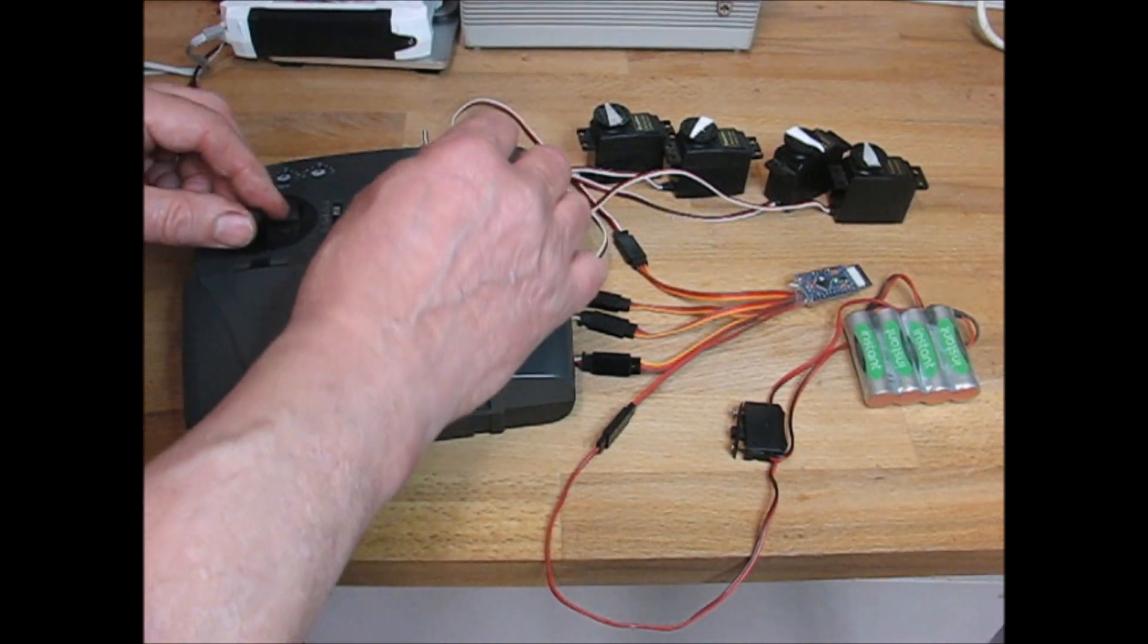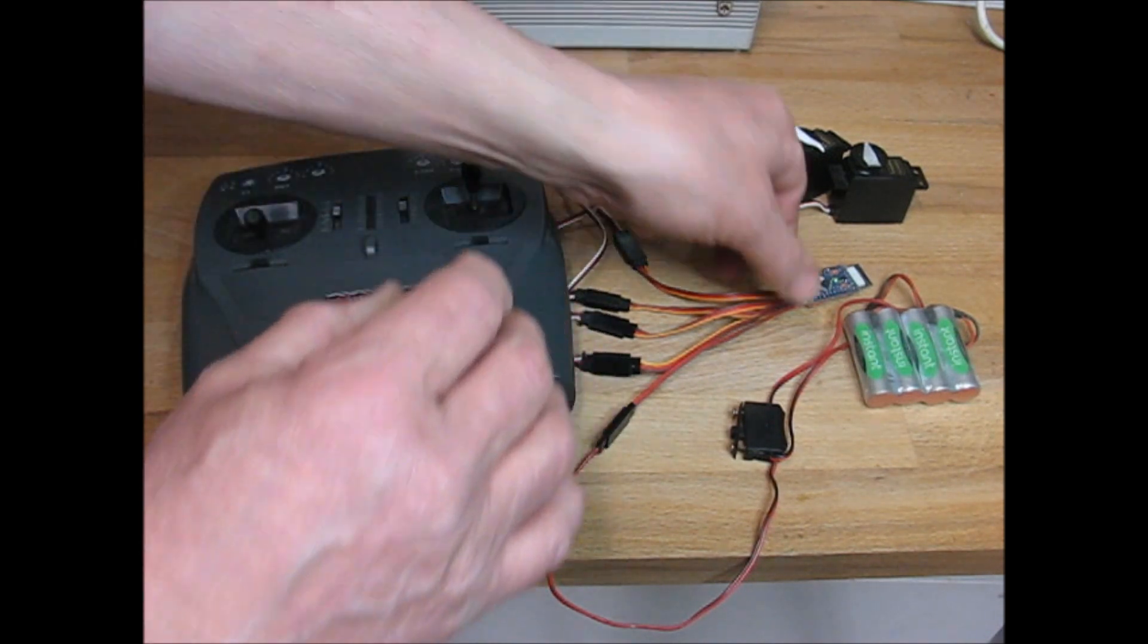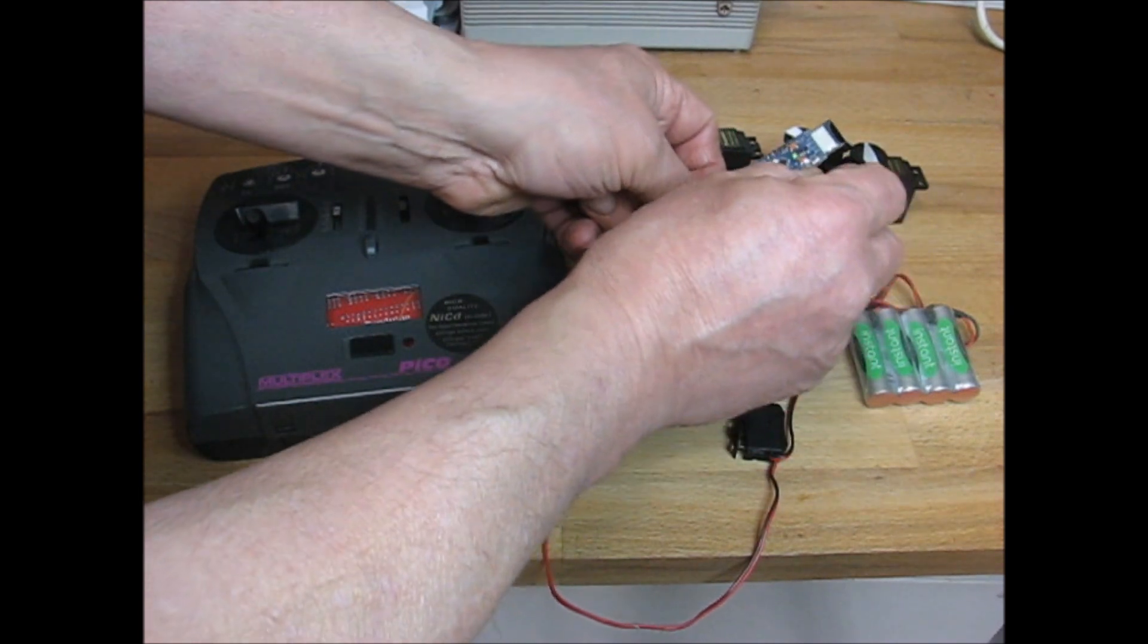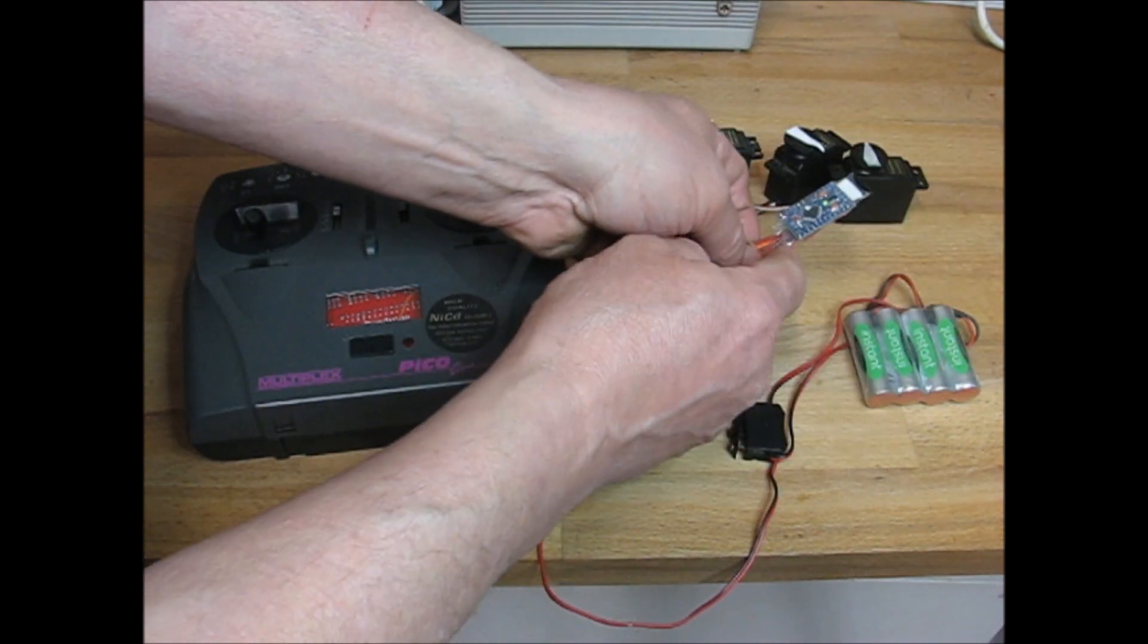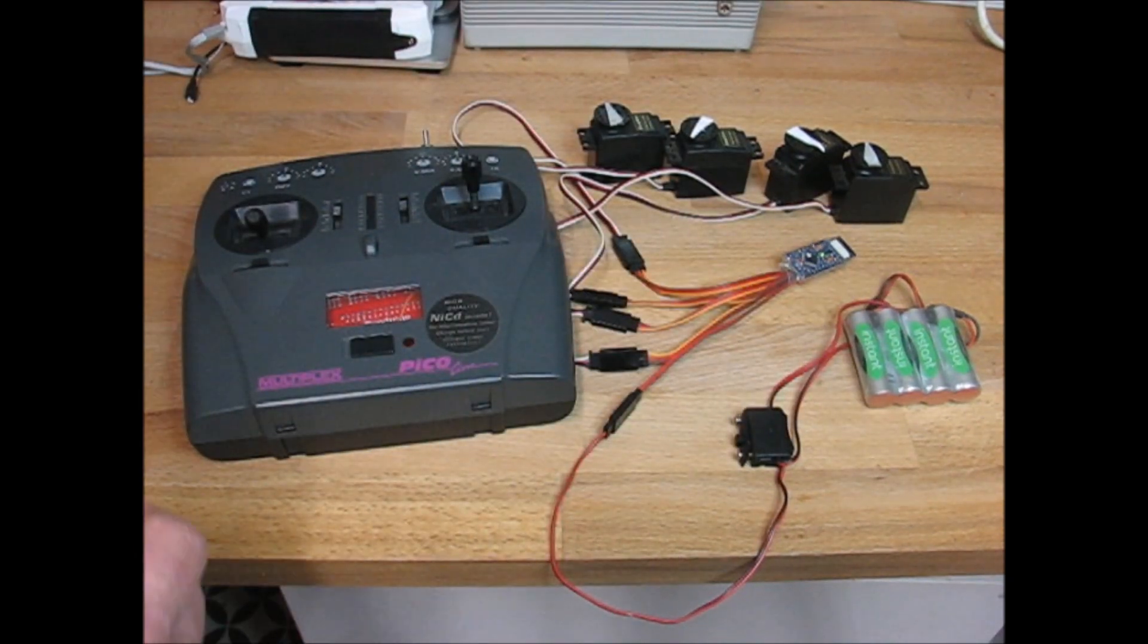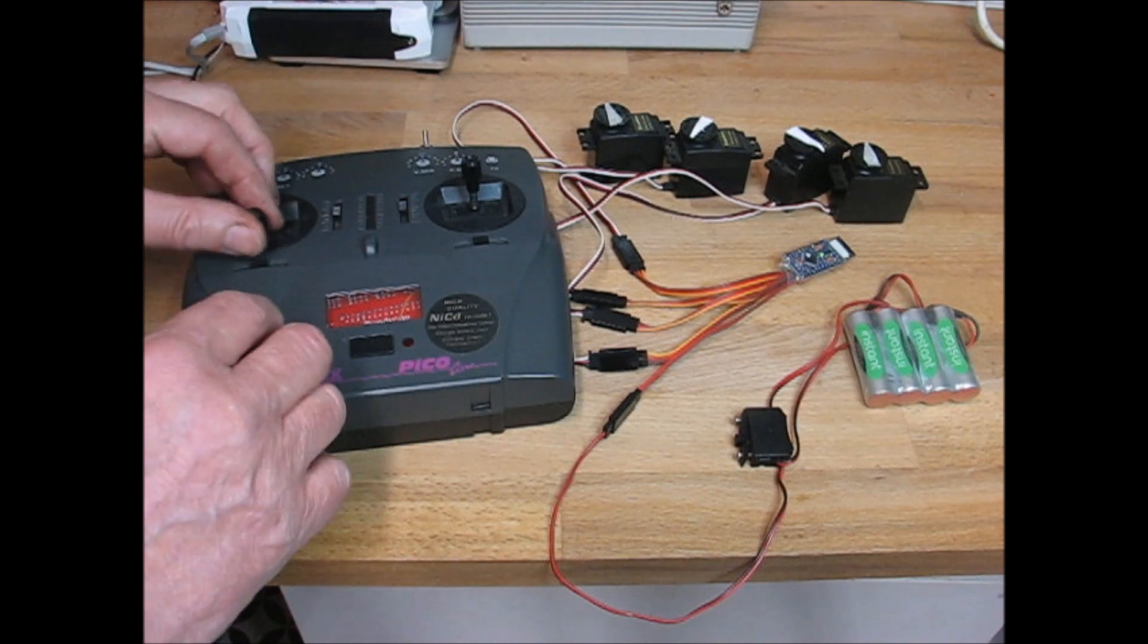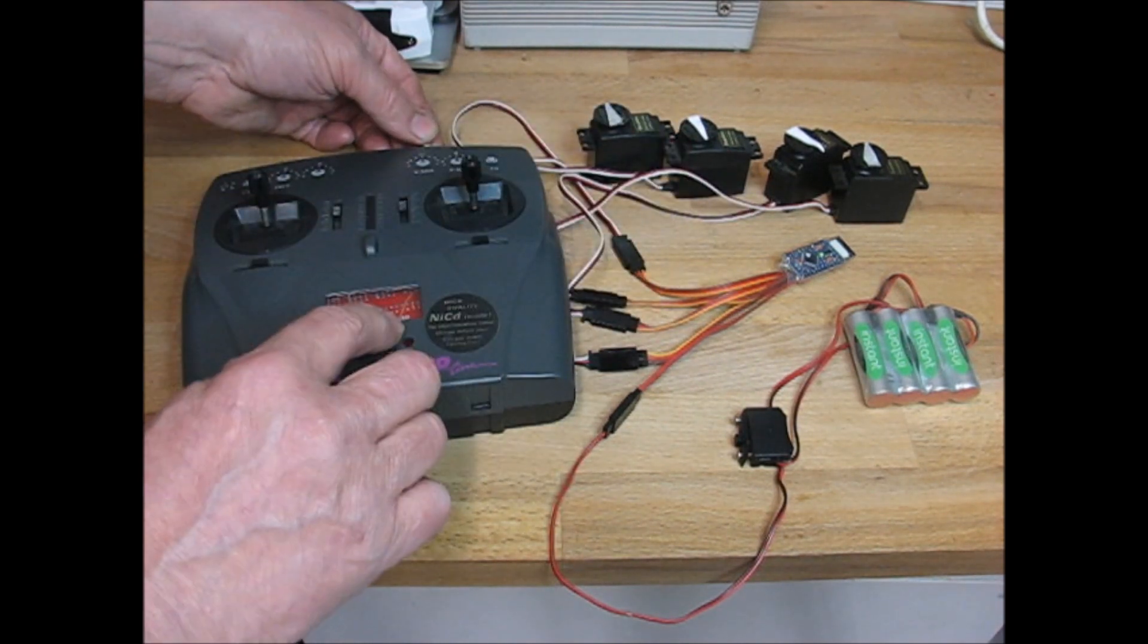You set the stick position to wherever you like the failsafe to be—in my case, low throttle and a little bit of rudder—and then you just momentarily place a link on there and it wiggles the servo to tell you that it's done it. From then on, that becomes the failsafe setting. So if I open the throttle and switch off, you'll see it go to low throttle and a little bit of rudder.